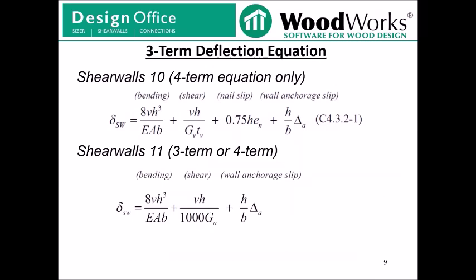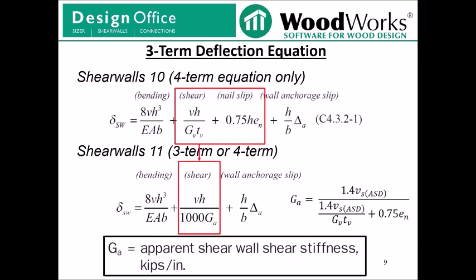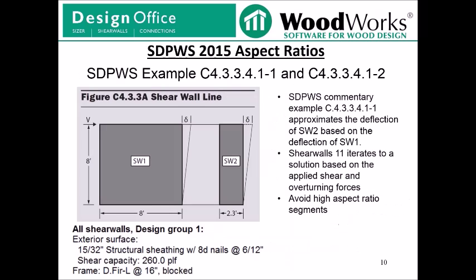Three-Term Deflection Equation. In ShearWalls 10, the only deflection option was the four-term deflection equation. Now for ShearWalls 11, we have incorporated the three-term deflection equation and give you the option of running your design using either equation. The three-term equation is essentially a simplification of the four-term, where the shear and nail slip components are combined into one shear component. It is now necessary to calculate an apparent shear wall shear stiffness GA, which is dependent on the allowable capacity of the shear wall segment and the nail slip associated with that segment. SDPWS 2015 commentary provides guidance on calculating GA.